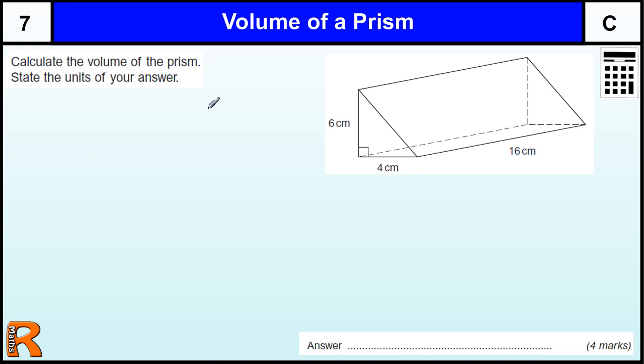Volume of the prism. Okay, we've got a prism, it's a triangular prism that's quite nice, it's a right triangle. So with all prisms you work out the area of the cross-section, that's the end of the prism.